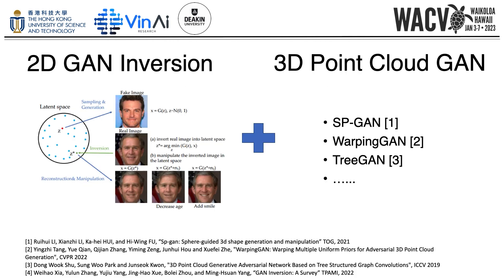In the 2D domain, inversion is a common approach to editing real data with generative models. 2D inversion aims to map the given real image into the latent space and edit the image. In the 3D domain, compared to point cloud analysis, 3D point cloud generative models are being studied a little less.